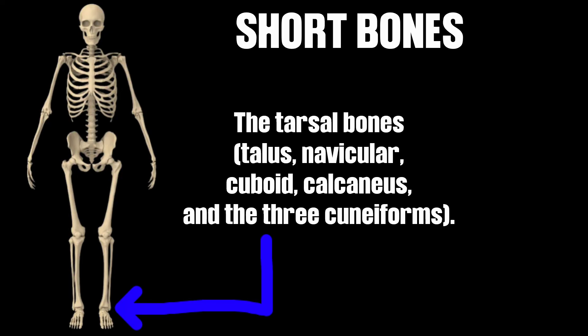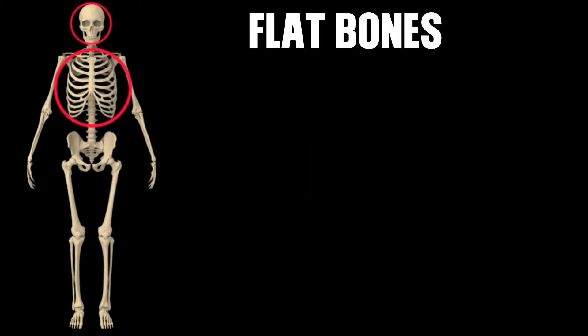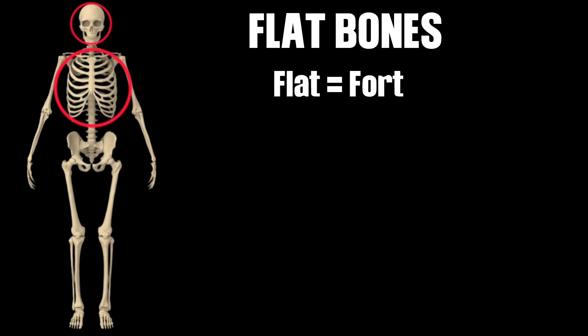Now let's move over to flat bones. Flat bones are thin and broad and they are typically found where protection of an organ or organs is necessary. The trick in remembering flat bones is to use the letter F in flat bones to remember fault — fault serves as a form of protection to protect something, and that is exactly what flat bones do: they protect vital organs.